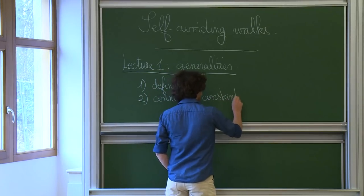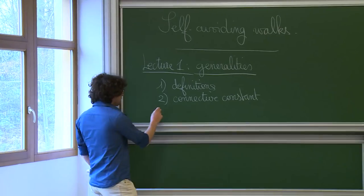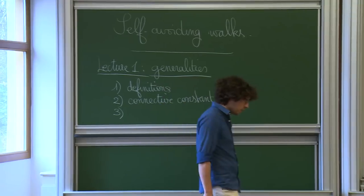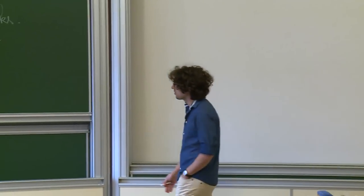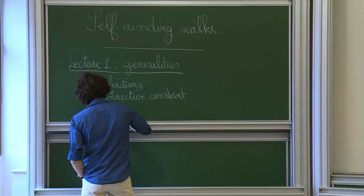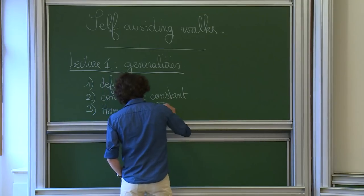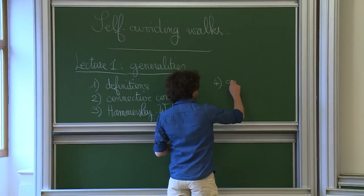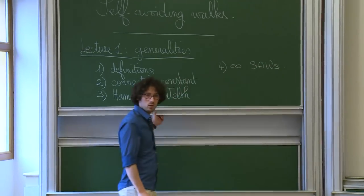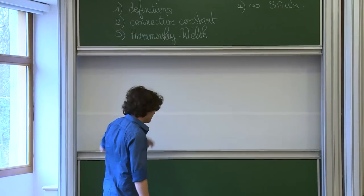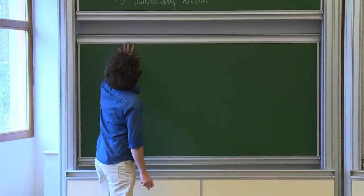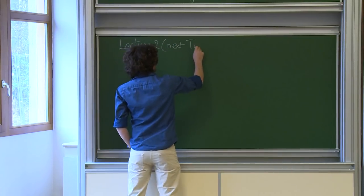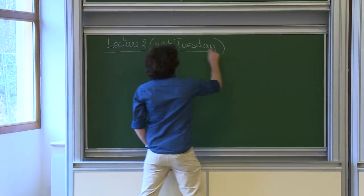Once we've defined the connective constant, there is a very classical argument called the Hammersley-Welsh argument — it's a very cute one — which will pop up several times in the lecture. We'll improve it in the second and maybe third lecture. We'll spend time to discuss it, and then finish with infinite self-avoiding walks: can we define a measure on infinite self-avoiding walks and how does it look?